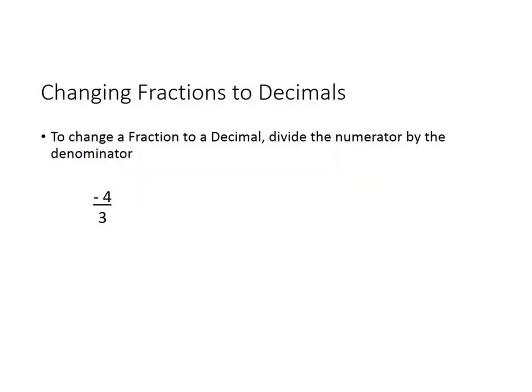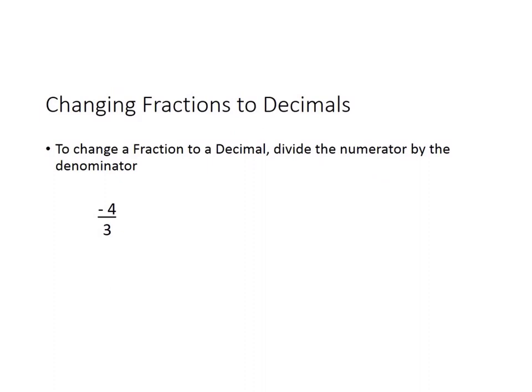Let's talk about changing fractions into decimals. To change a fraction to a decimal, you divide the numerator by the denominator. We're going to take 4 and divide it by 3. We'll worry about the negative symbol when we get to the final answer. 3 goes into 4 one time, subtract, and you get a 1. You can always add a decimal and two zeros and it won't change the value of the 4.